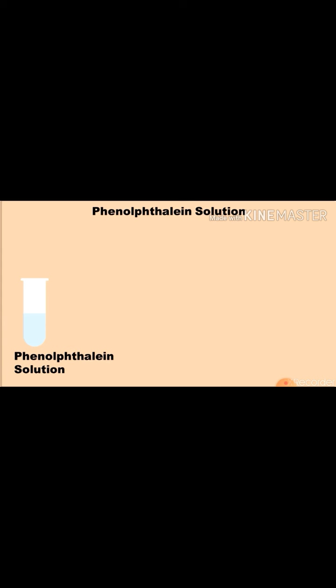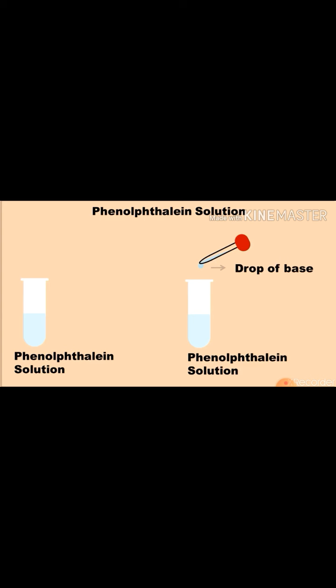Take another test tube half-filled with phenolphthalein solution. Pour few drops of base into the phenolphthalein solution. Pink color appears. It means phenolphthalein solution changes into pink color in the presence of base.